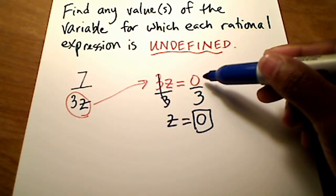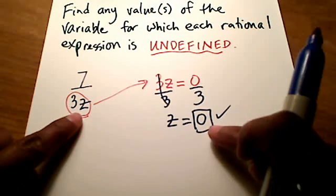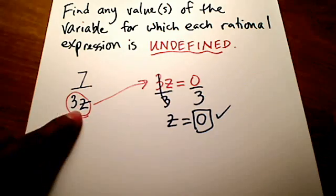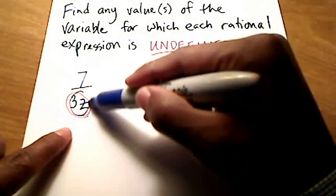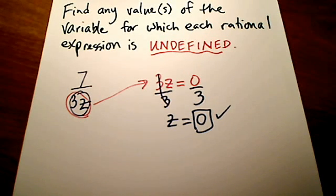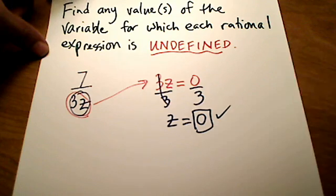If you divide both sides by 3, it's easy to see that z is zero. If z is zero and you plugged it in here, 3 times zero would be zero. That would make my entire denominator zero, which would make this expression undefined. That's what they're looking for, an answer of zero.